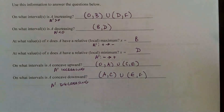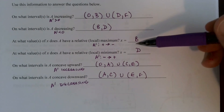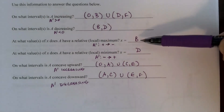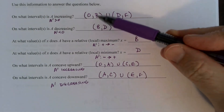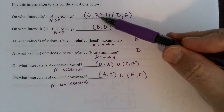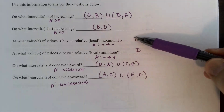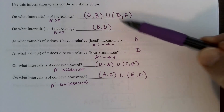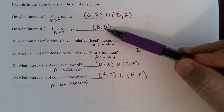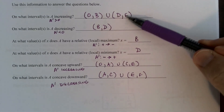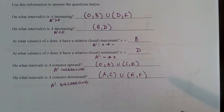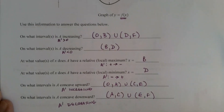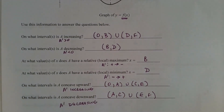Notice our answers are consistent — we said B was a local maximum because A is increasing from zero to B and then decreasing from B to D. Similarly, D is a local minimum because A is decreasing from B to D and then increasing from D to F. There are plenty of exercises to practice, so please get busy with those.